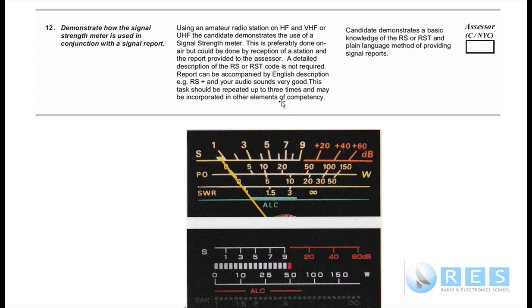Reading the method: using an amateur radio station on HF and VHF or UHF, the candidate demonstrates the use of a signal strength meter. This is preferably done on air but can be done by reception of a station and the report provided to the assessor. A detailed description of the RS or RST codes is not required. The report can be accompanied by an English description such as readability and strength, for example, 'your audio sounds good.'